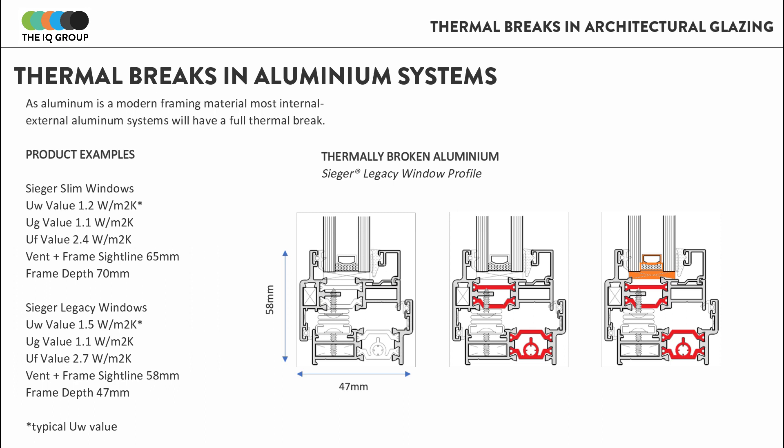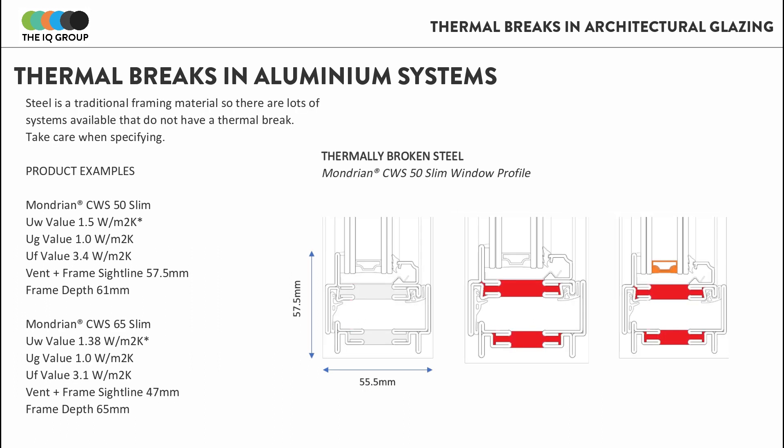You're normally looking at a UW of 1.5 W/m²K for the SIGA Legacy system. Now let's look at some steel systems. The profile shown here is the CWS 50 slim system from the Mondrian range, which has a thermal break.